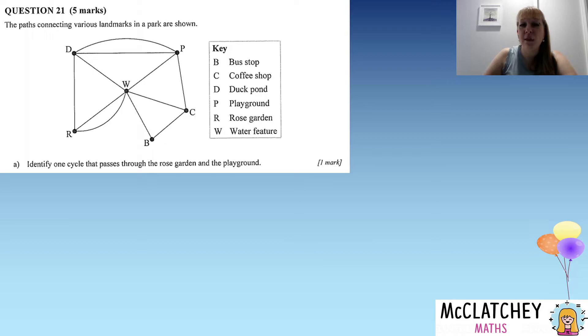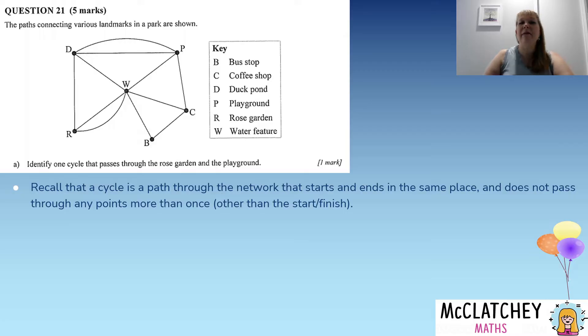Firstly, let's identify one cycle that passes through the rose garden and the playground. It's worth one mark. So let's remember what a cycle is to start off with, that's key vocabulary. It's a pathway through a network. It's going to start and finish in the same place. It's not going to pass through any points more than once other than the start and finish.